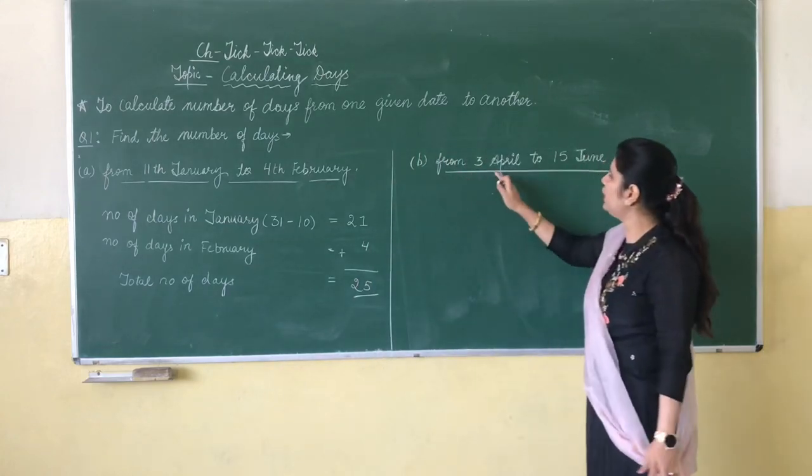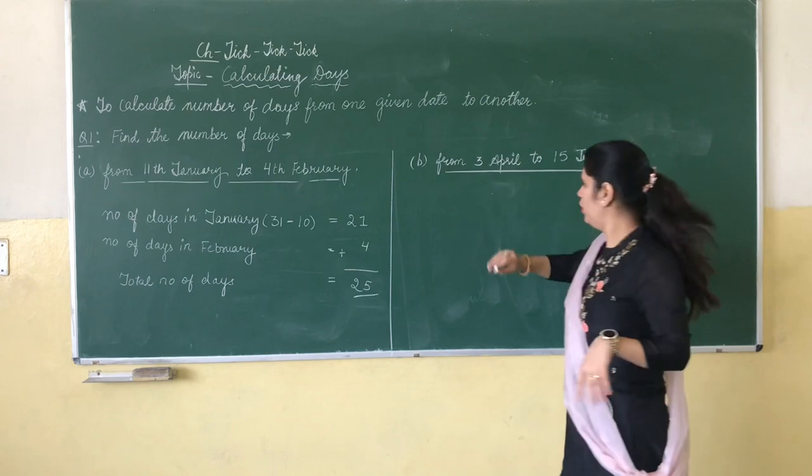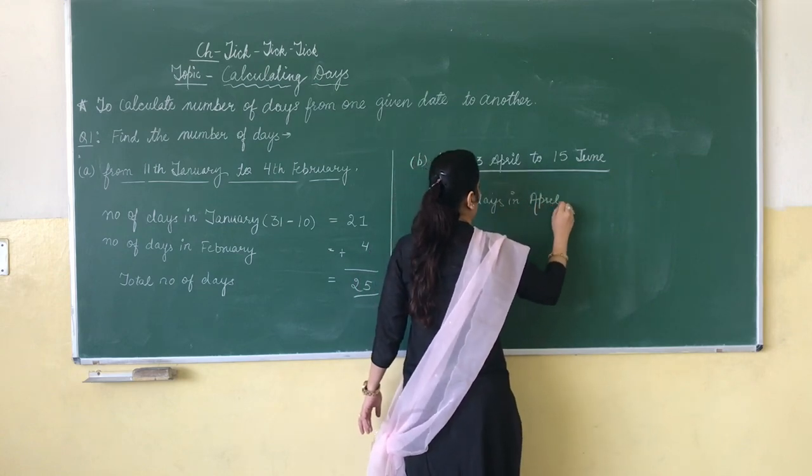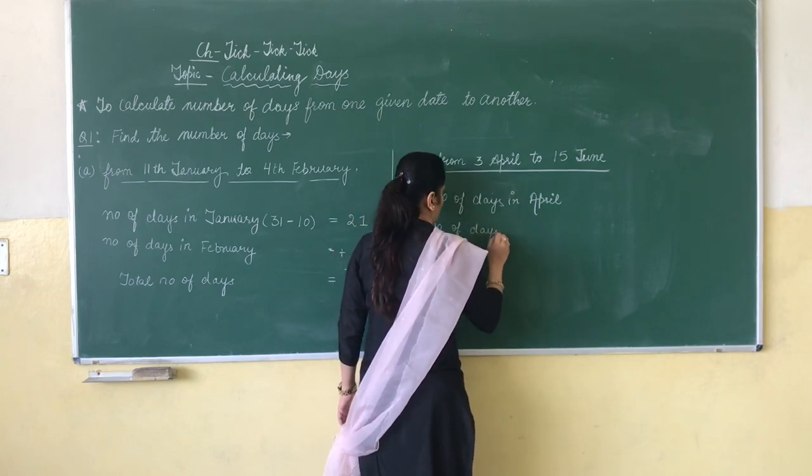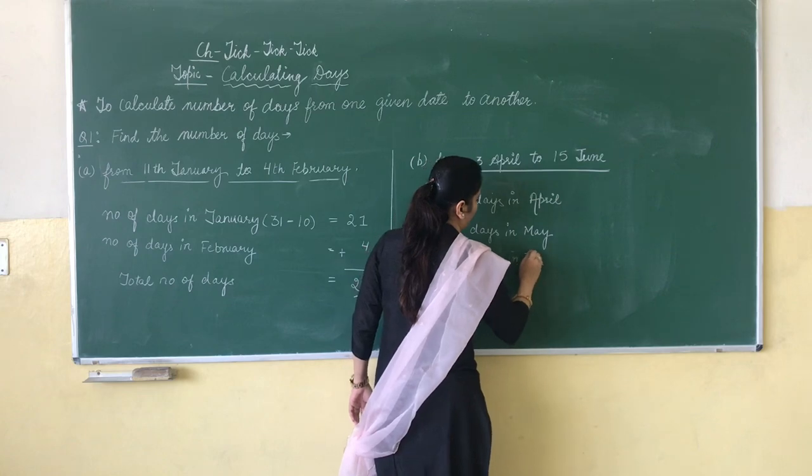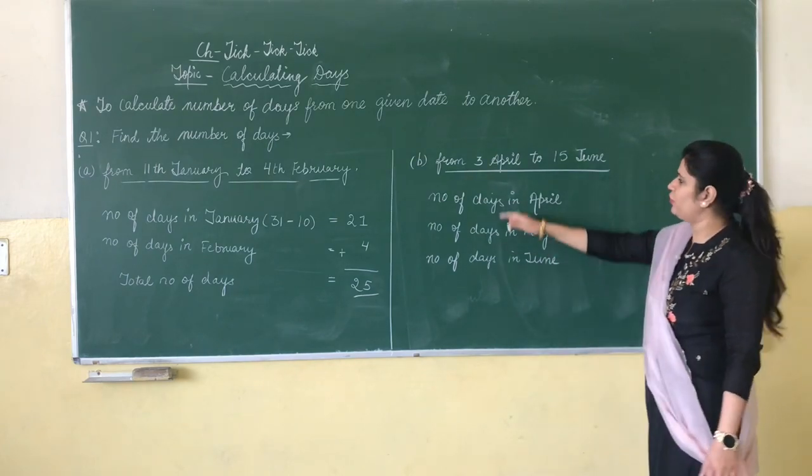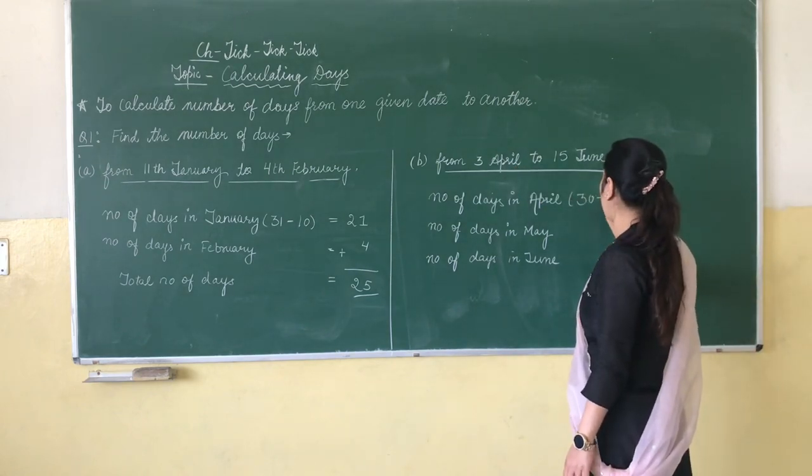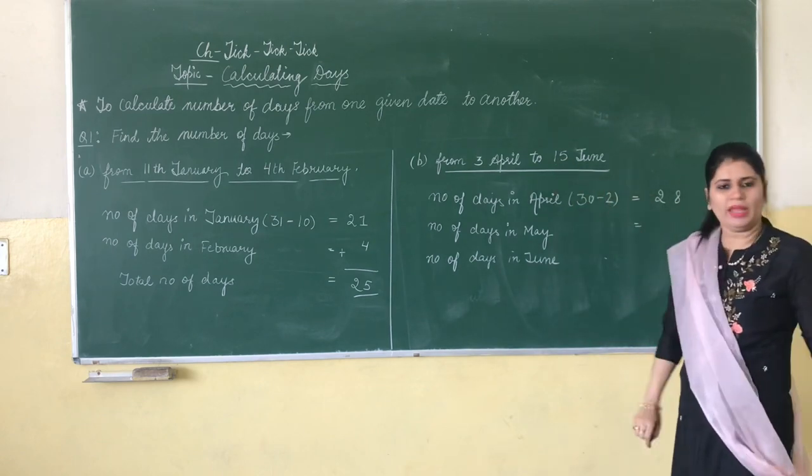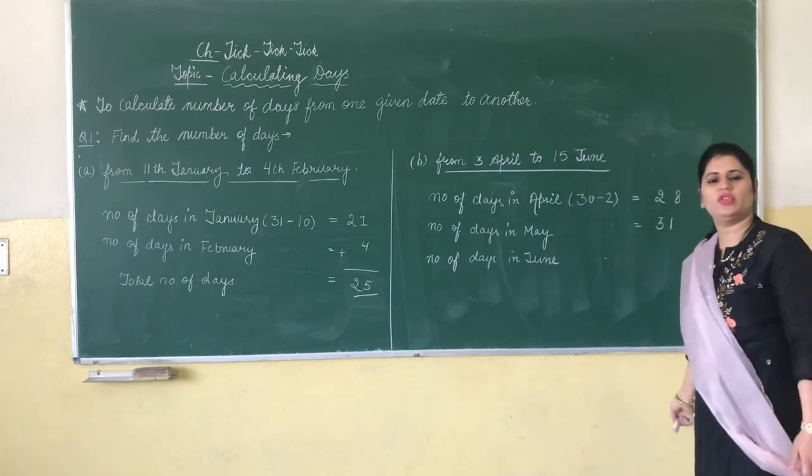So the next part is from 3rd April to 15th June. We will have to take the number of days of April, May, and June. Number of days in April, how many number of days are in April? 30. We have to take it from 3rd April, so we will write 30 minus 2, so how many days are there? 28 days. How many days are in May? We have to count full May, so how many days are there? 31 days. How many days are in June? Till 15th June, so that is 15.